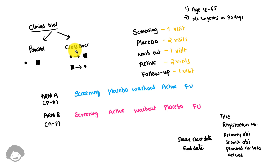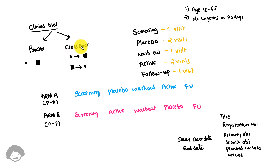In crossover studies, the same subjects receive both placebo and active treatment. For the first specified period, subjects take one treatment and then switch over to the other. Similarly, subjects assigned to the other arm take active during the first period and then switch to placebo for the second period.